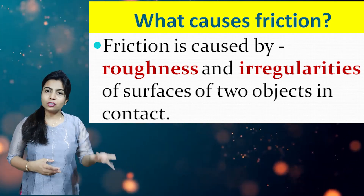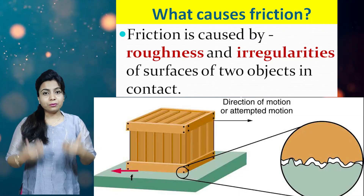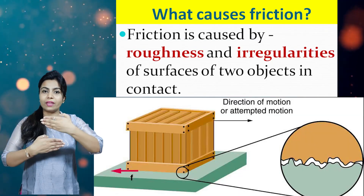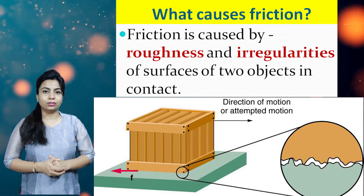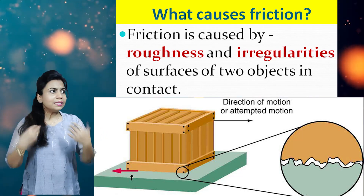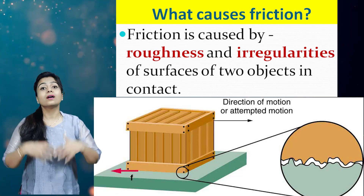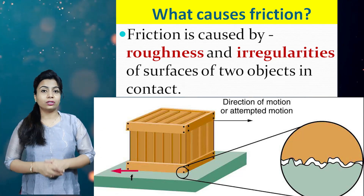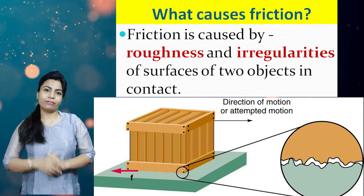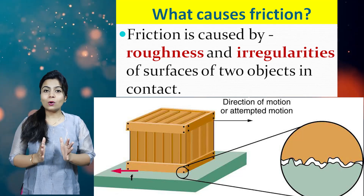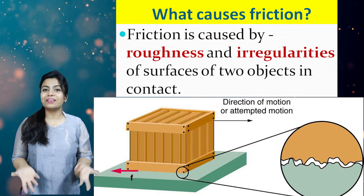In the picture you can also see the object is kept on the surface and the roughness of that surface is applying friction in the opposite direction. So rough surfaces apply more friction and smooth surfaces reduce friction. Friction is caused due to roughness and irregularities.